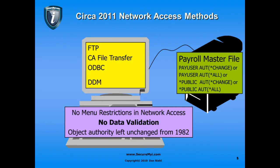I could overlay a file with FTP and totally obliterate it. For example, I could replace a customer file with a copy of a PC file — my log.txt file off my C drive — and it would totally obliterate the customer file with invalid data. The problem is that back-end authorities on the payroll file and other data files have not changed since 1982. We still have public-all authority, or pay-user-change, pay-user-all, public-all, public-change. The data is no better protected than it was, but now we have many more ways to manipulate it.